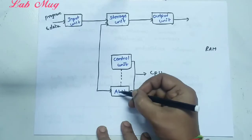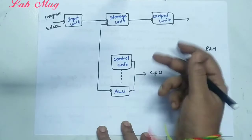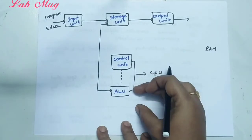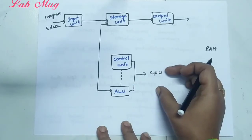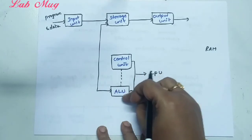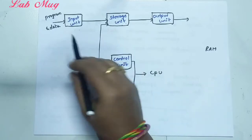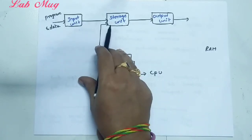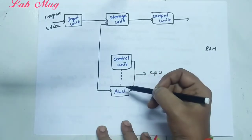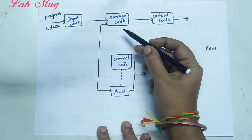ALU operations are performed with the help of the control unit. This is the central processing unit. Control unit and arithmetic logical unit together are called the central processing unit — the main CPU. Once processed, the result goes back again to the storage unit. The input unit has a single arrow going in, but the storage unit values go to the ALU for processing, and the output comes back to the storage unit.